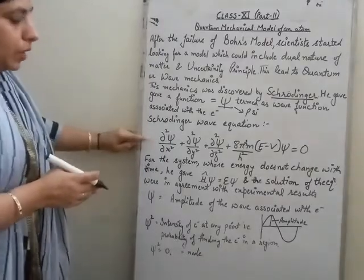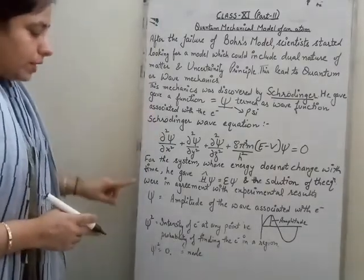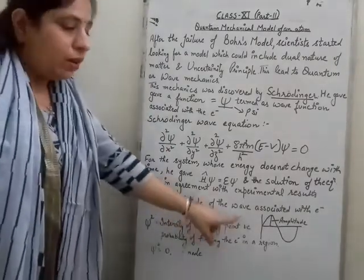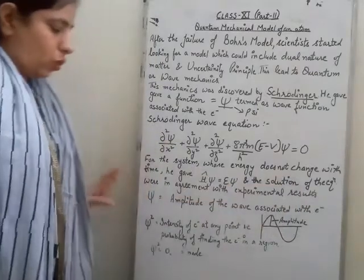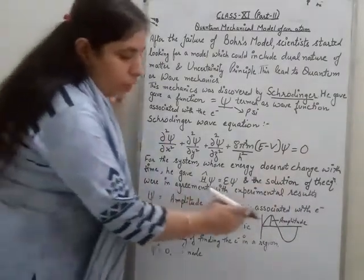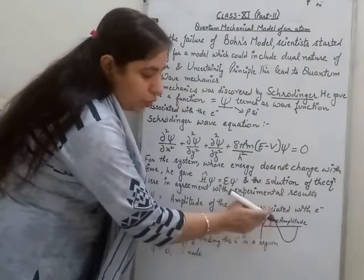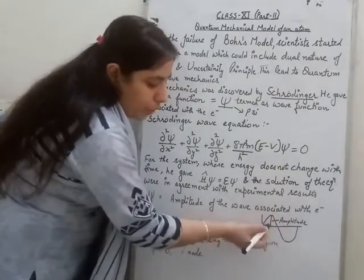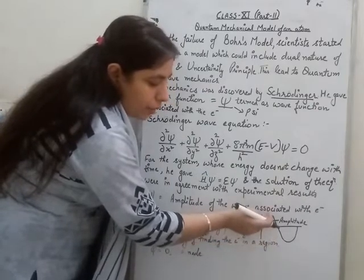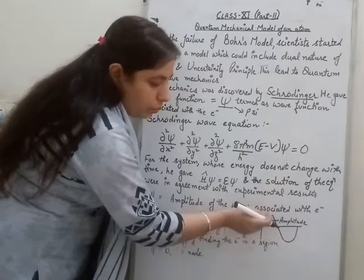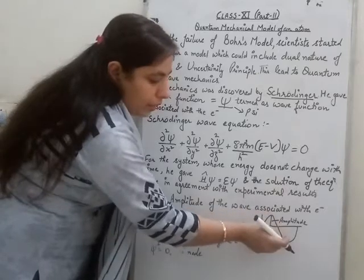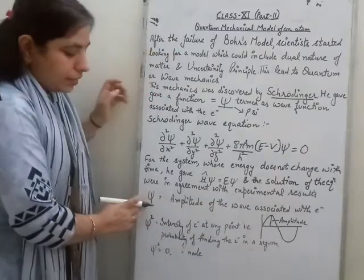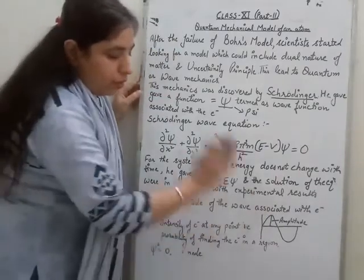Now, here we are using the term psi. What psi gives us is the amplitude of the wave which is associated with the electron. If we represent the wave, the amplitude is the maximum displacement of the wave from its mean position, in the crest as well as in the trough. So psi represents this amplitude of the wave.